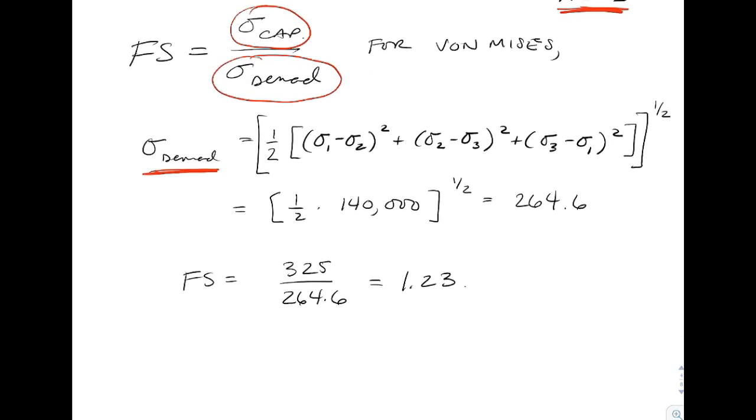That term, that's the term that we just found out that was 140,000, that was why I kept track of that number. We're going to multiply that by one-half and then take the square root of the entire quantity. That gives us a number of 264.6. The factor of safety is the capacity divided by the demand, and so we end up with a factor of safety of 1.23.